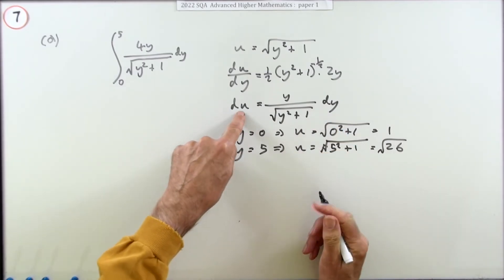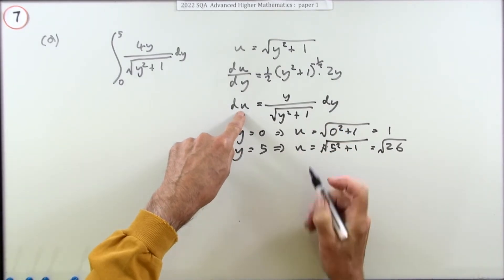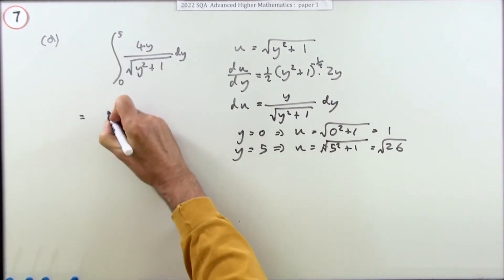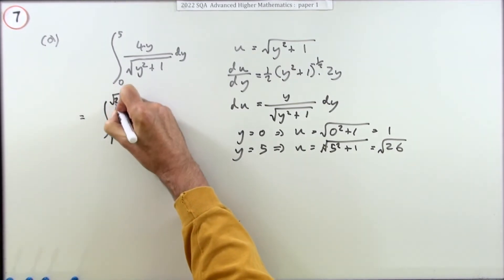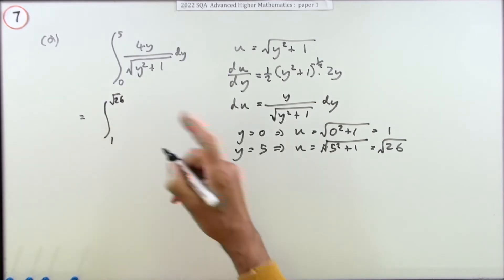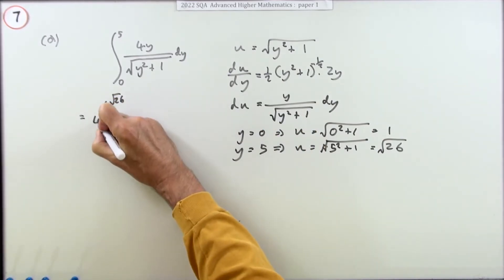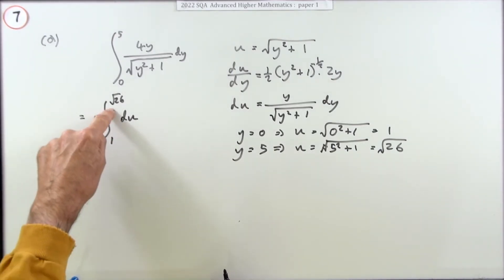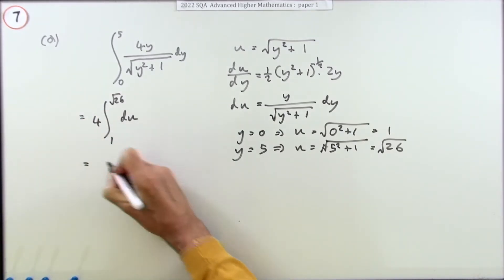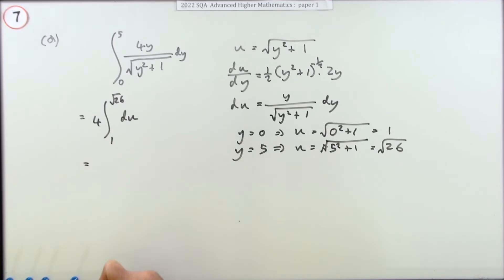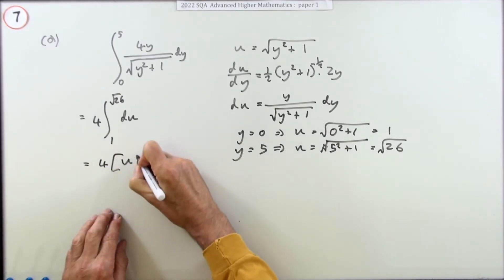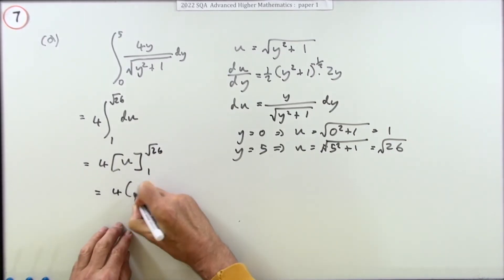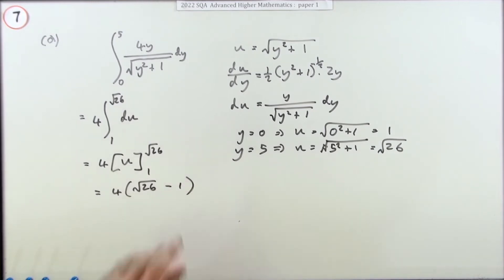Now most of the integrand disappears — to place du, I need y over √(y² + 1) dy, which is almost everything in the integrand except the 4. So the integral from 1 to √26 becomes just 4 du. Taking the 4 out leaves du (equivalently, integrating 1 du). The result is 4u from 1 to √26, giving 4(√26 − 1), the same answer as before.